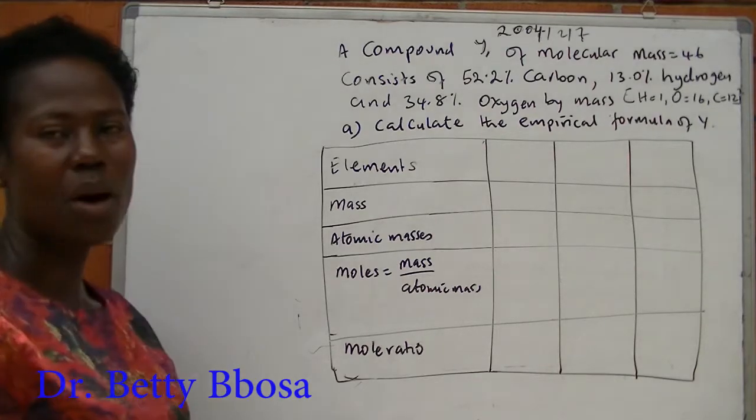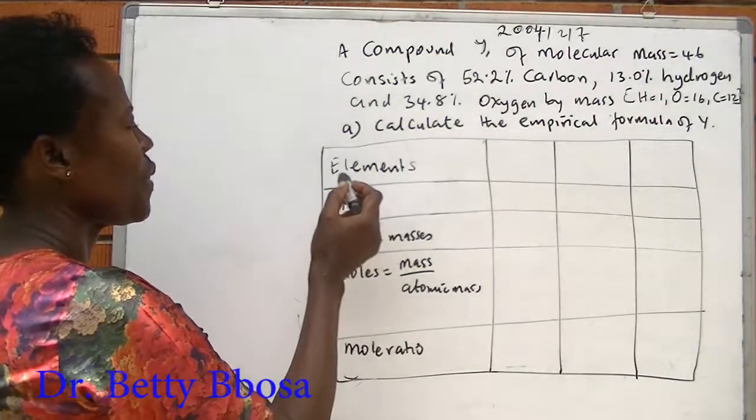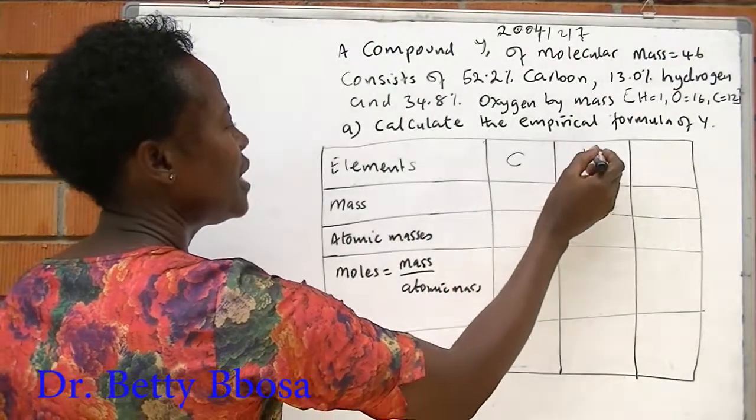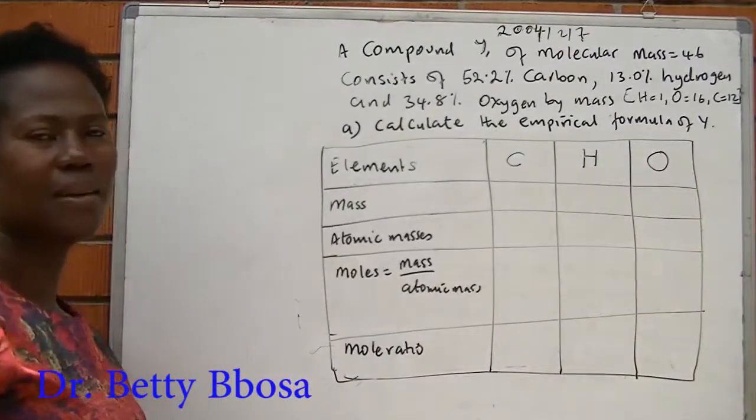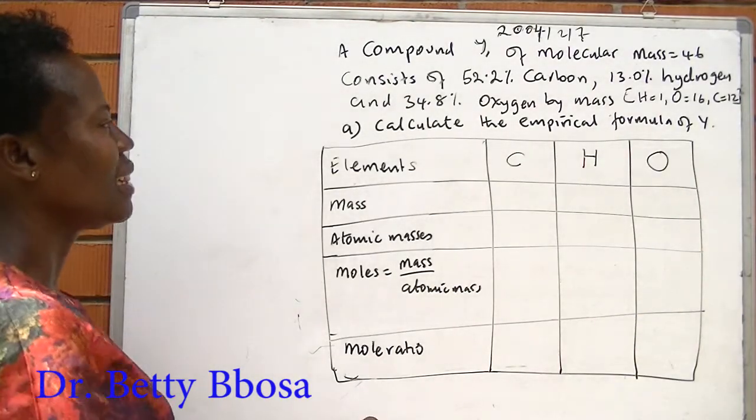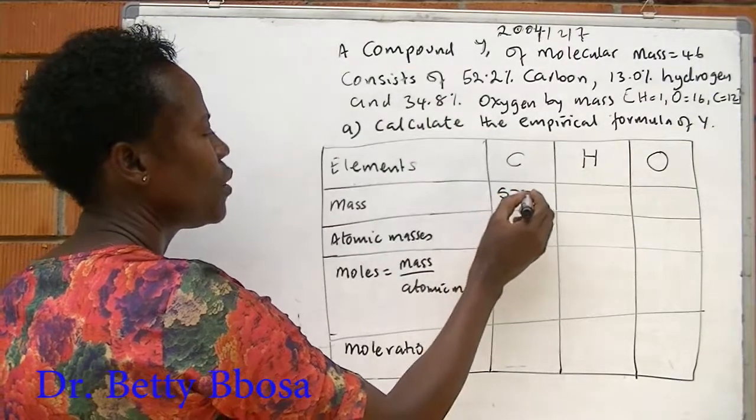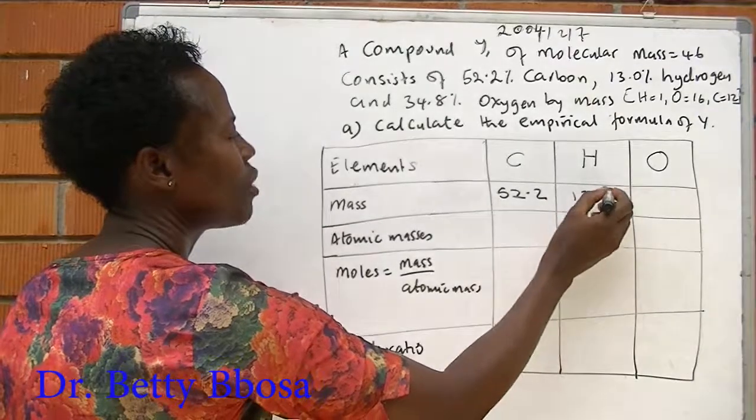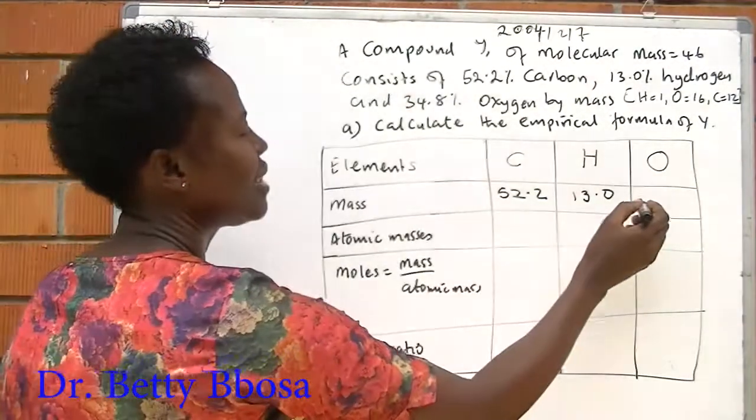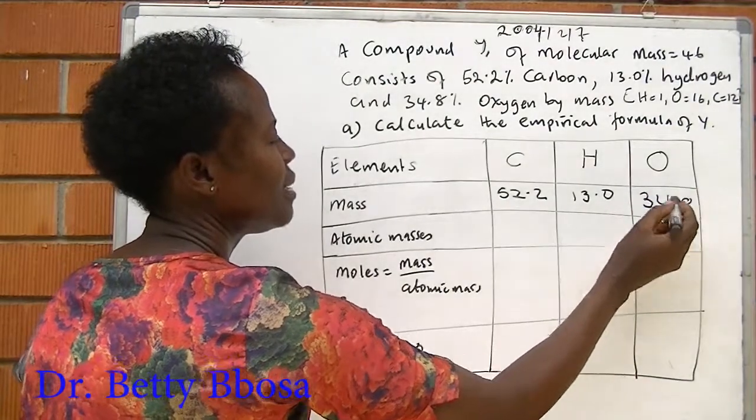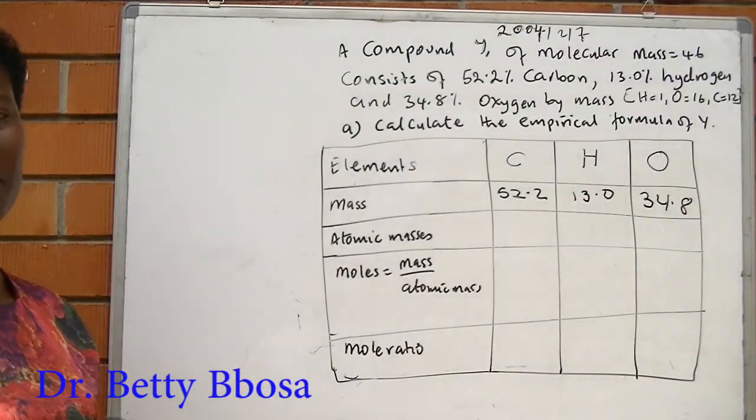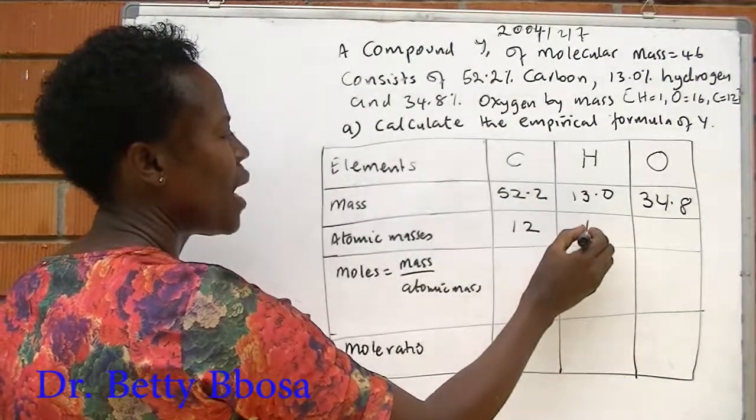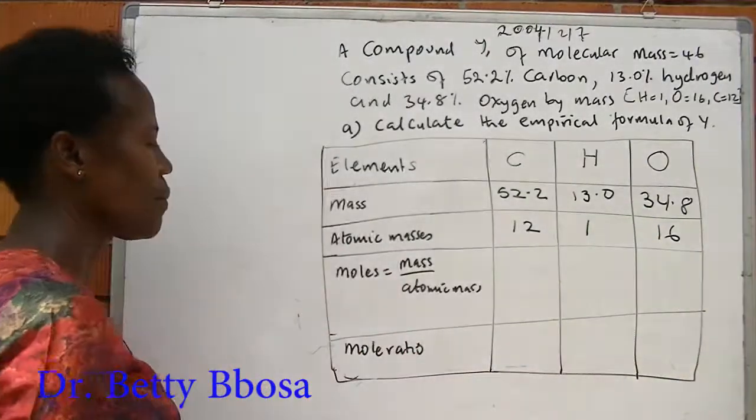Remember I told you to draw the table before you calculate elements. We are given carbon, hydrogen, and oxygen. Then the percentage composition by mass, that of carbon is 52.2%, hydrogen is 13.0%, and oxygen is 34.8%. Atomic mass: the atomic mass of carbon is 12, hydrogen is 1, and oxygen is 16.